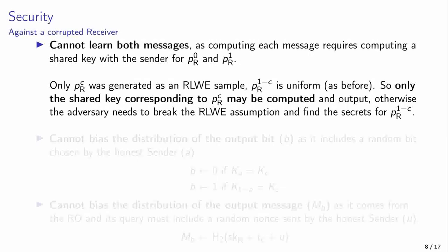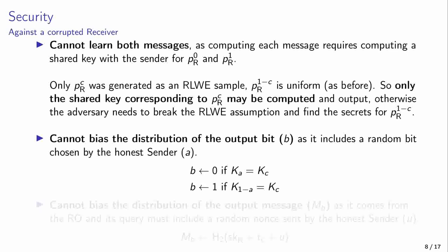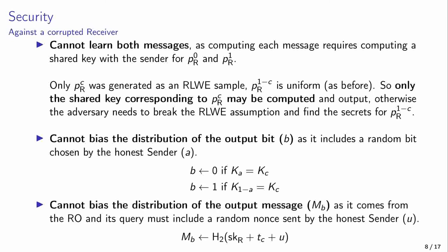In the case for a malicious receiver, it cannot learn both messages, as this would require it to find both shared keys. But knowing both shared keys would require finding the RLWE secret from a uniformly random sample. This is the random key exchange message. Furthermore, the malicious receiver cannot bias the distribution of the choice bit B, as it results from the XOR of the bit C with the bit A, chosen uniformly at random by the honest sender, unknown to the receiver. And it cannot bias the distribution of the output message, as it comes from the random oracle, and its query must include a random nonce U, sent by the honest sender.